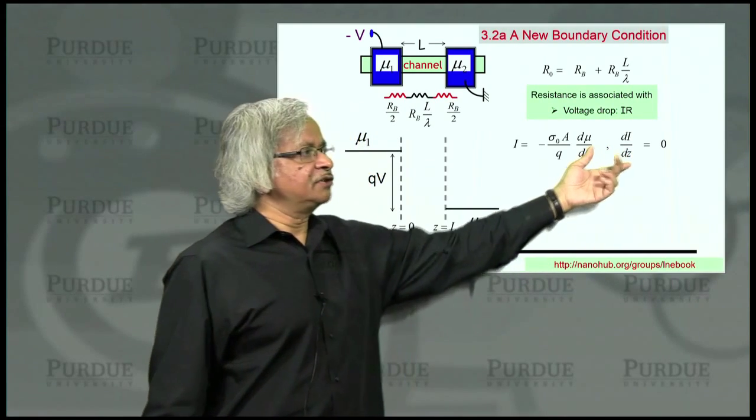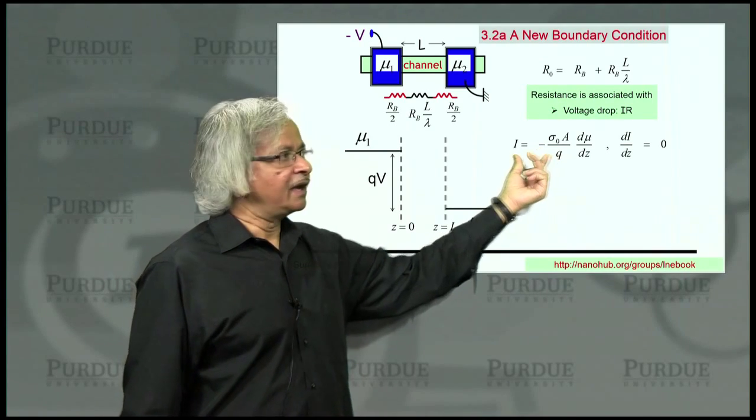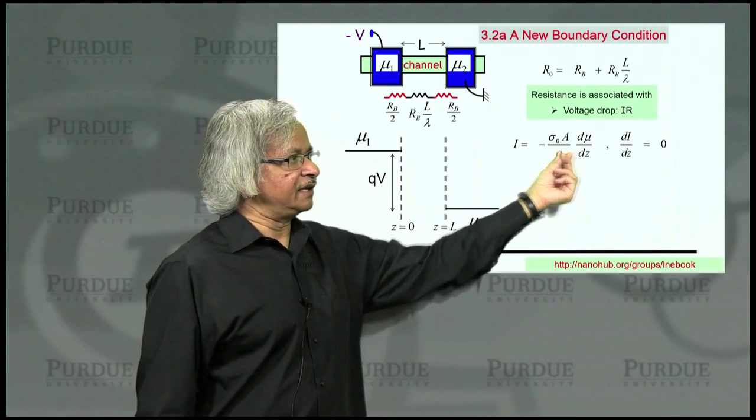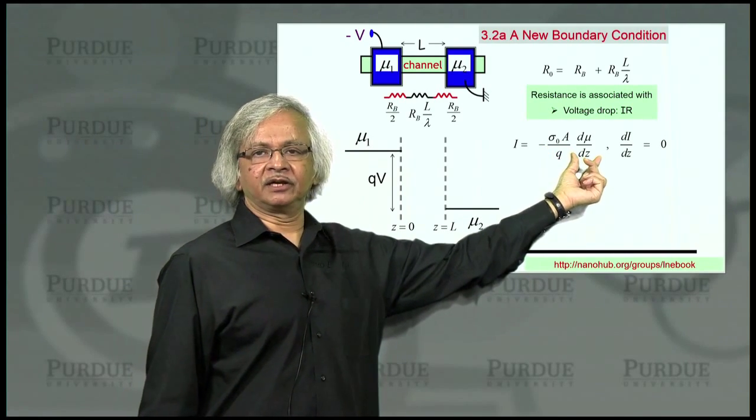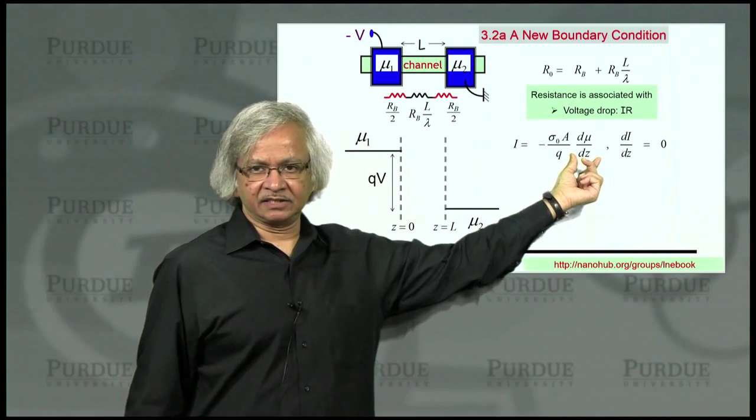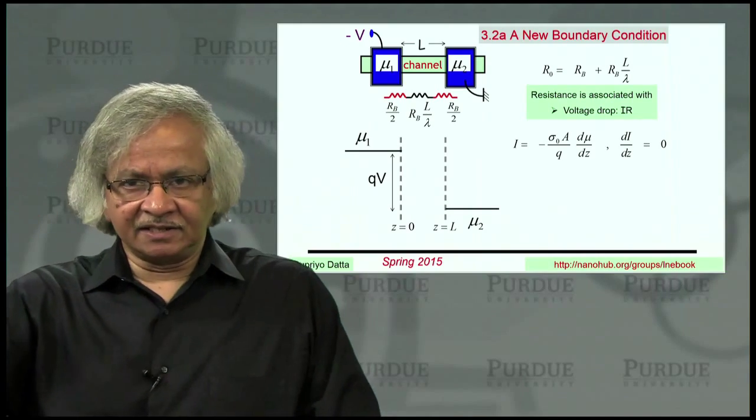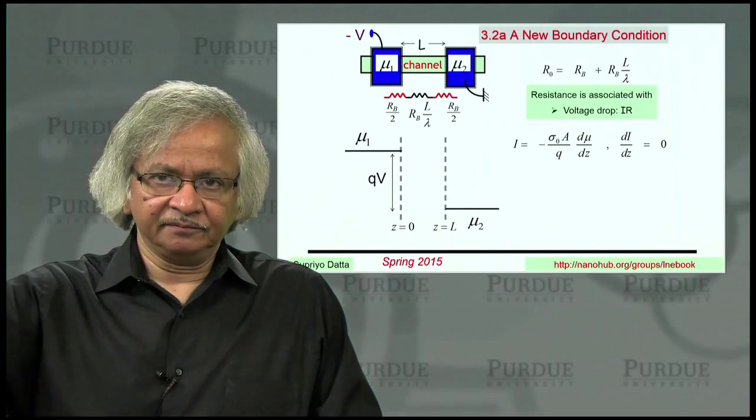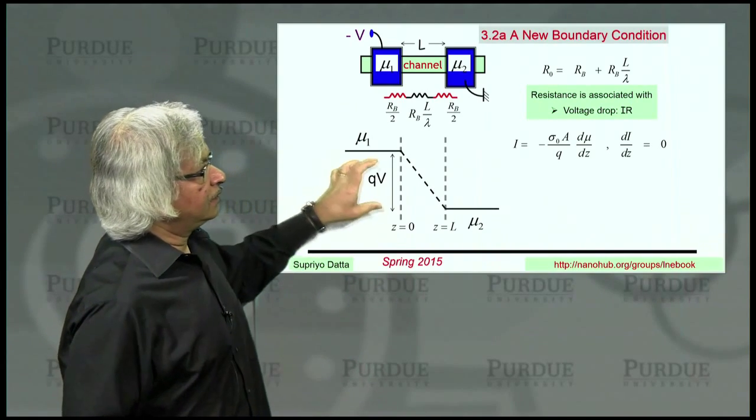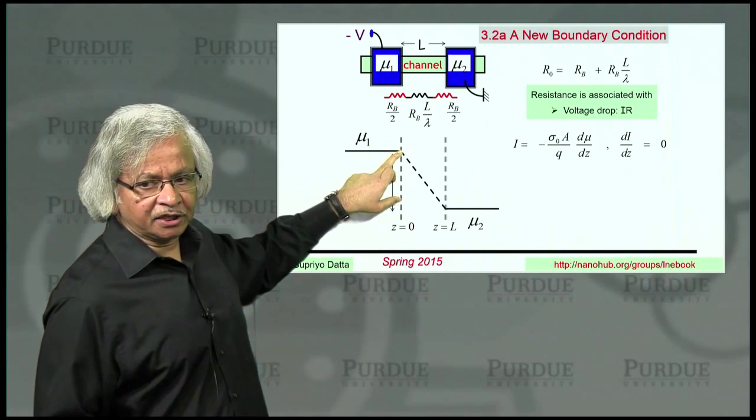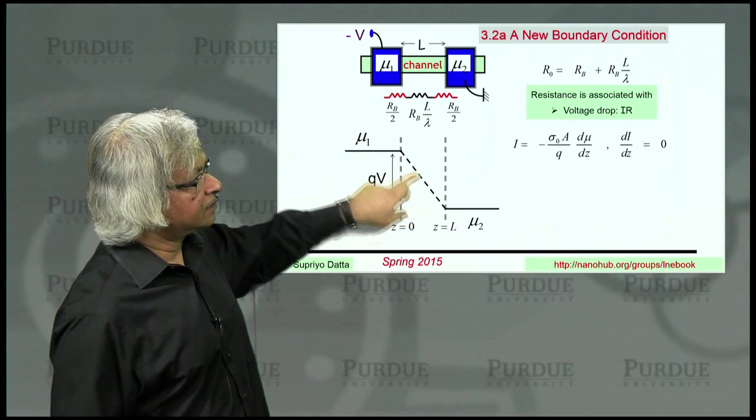Now, this tells you then that the current has to be a constant spatially. And if the current is a constant, then as long as what's out front is constant, it means the slope of the electrochemical potential must also be a constant. Now, a curve whose slope is a constant is a straight line. Straight line has constant slope. So what that means is that the electrochemical potential must vary like so across the channel.